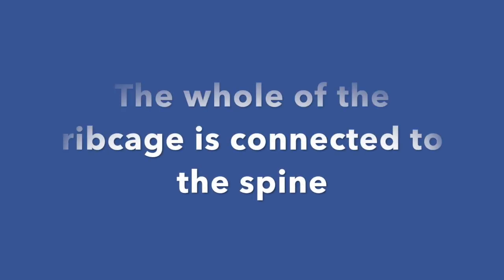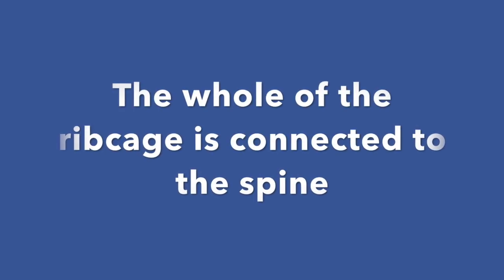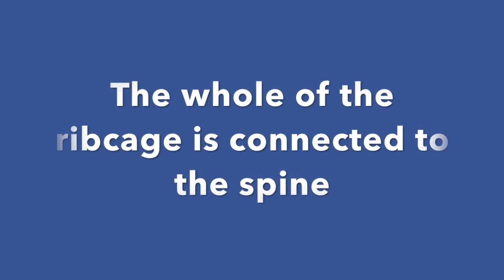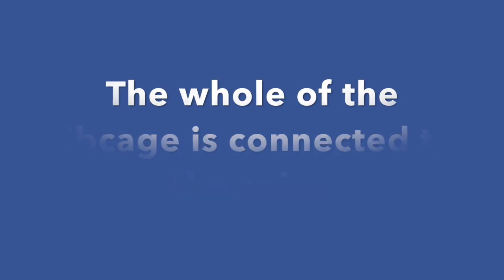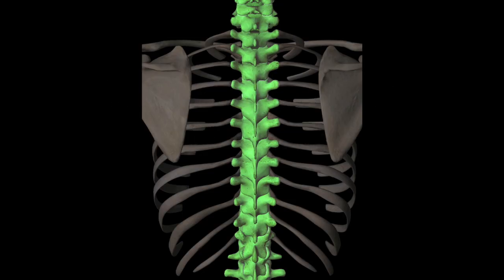The rib cage is connected to the spine. If you have a look here, you can see that every pair of ribs is connecting to a vertebra of the spine.